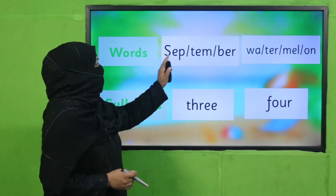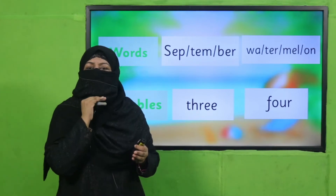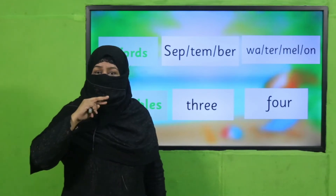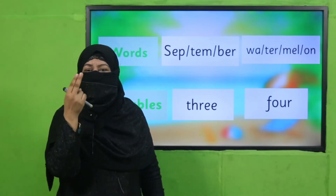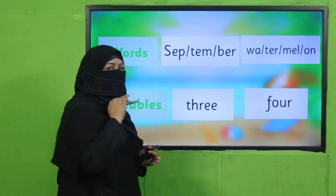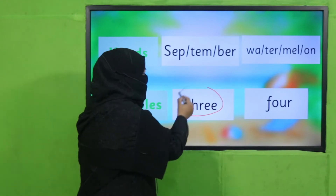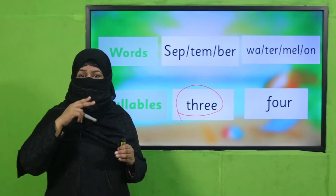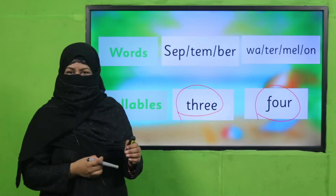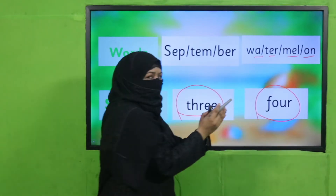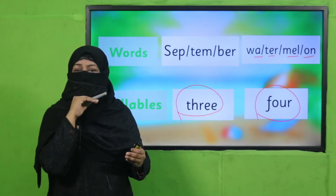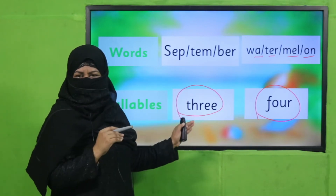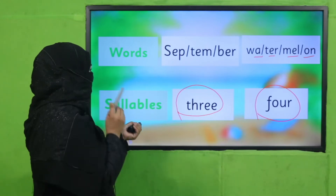I'm giving you another tip for counting syllables. When you pronounce a word, place your hand under your chin and say the word. How many times you feel the movement of your chin tells you how many syllables the word has. Say 'September' — how many times does your chin move? Three times — that's why it has three syllables. Now say 'watermelon' — how many times does your chin move? Four times — so it has four syllables. By separating vowel sounds and pronouncing the word, we can find how many syllables it has.